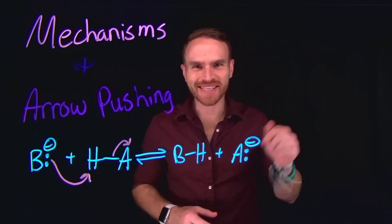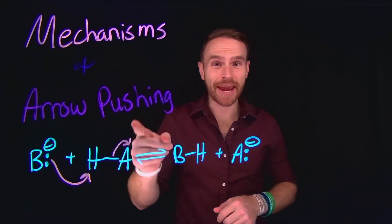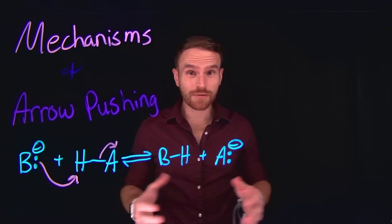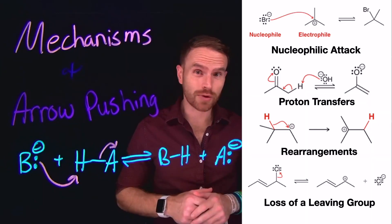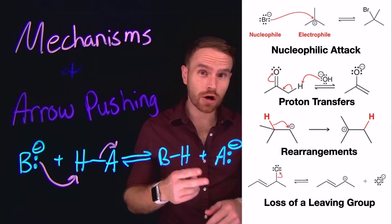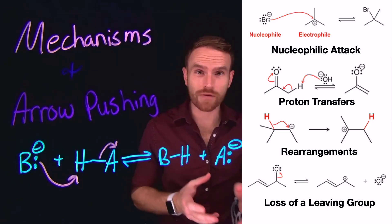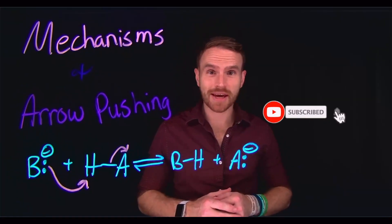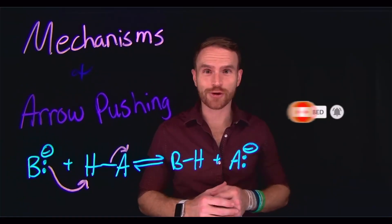Today we're going to be learning about mechanisms and arrow pushing in organic chemistry. Specifically, we're going to be looking at the patterns that you can identify and also how to draw curved arrows to indicate the flow of electrons. Make sure you stick around to the end because I have some practice problems that should help for your next exam.